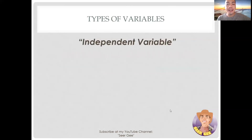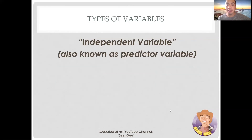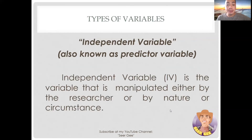Moving forward to the independent variable — in order for us to understand further and to wipe out our confusion, let's now discuss the independent variable, also known as predictor variable. Independent variable is a variable that is manipulated either by the researcher or by nature or circumstance. It is also known as the predictor or explanatory variable — simply put, the factors that you think explain variation in the dependent variable. In other words, these are the causes.